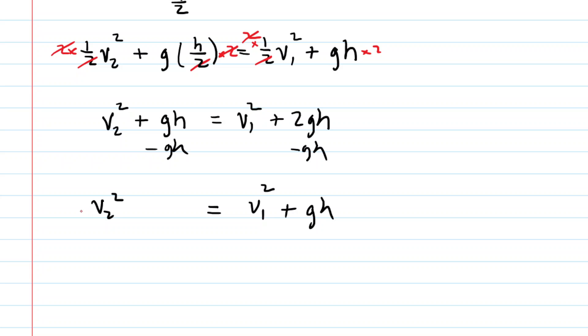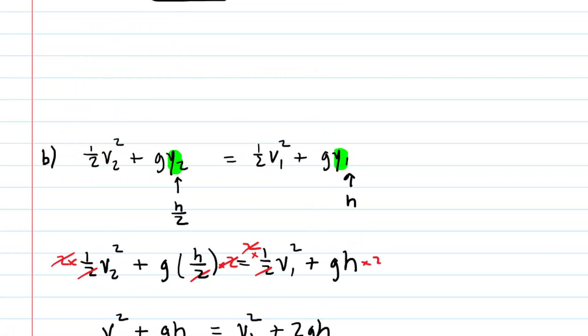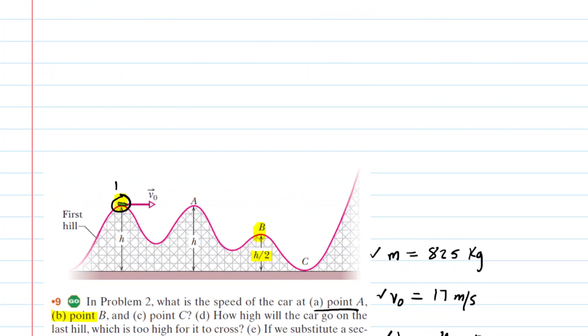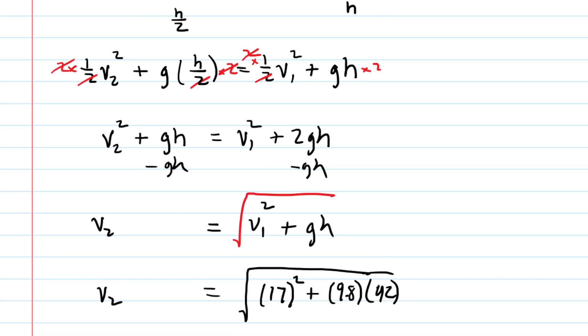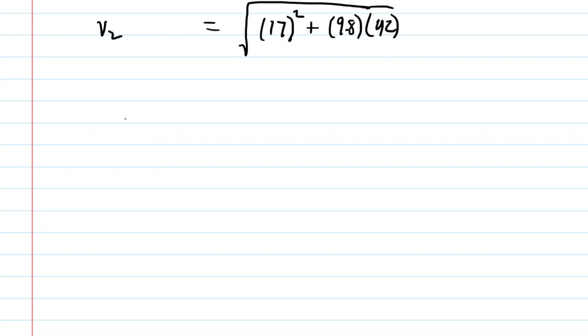And then finally, to solve for the V2 speed, we're just going to take the square root on both sides, because that cancels the squared on the left hand side. So at this stage, all we have to do is plug in the known values. Remember, the initial speed was that 17 meters per second squared. We have G, which is 9.8 meters per second squared. And then H was given in the question, if we go all the way back up here, H was 42 meters. So we'll plug that in. And if we punch the right hand side into our calculator, we will see that the correct answer to part B of this question is about 26.5 meters per second.